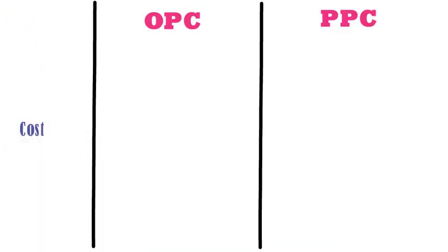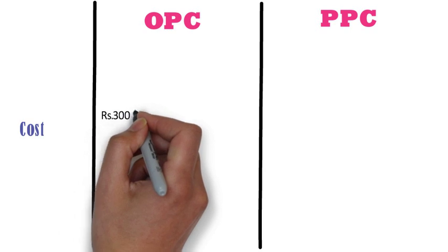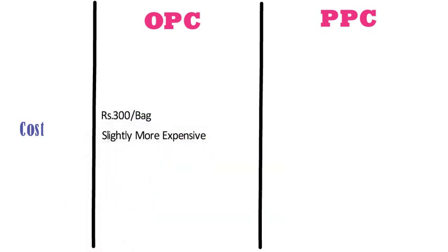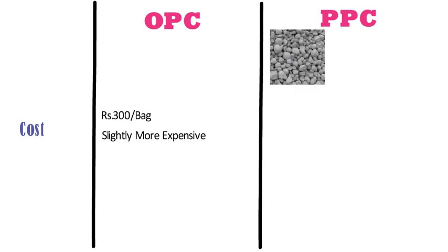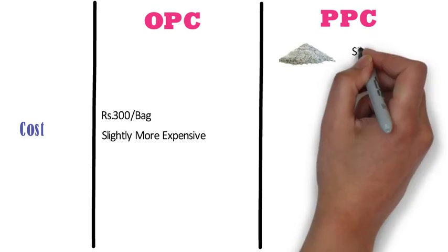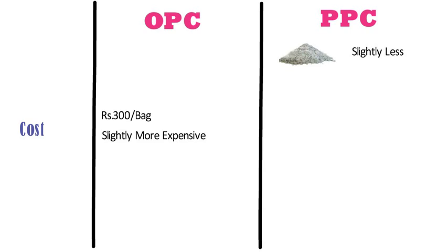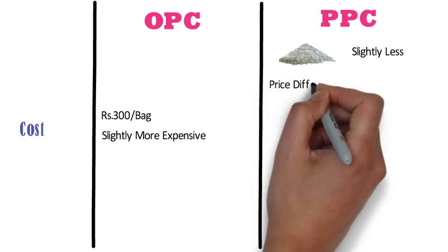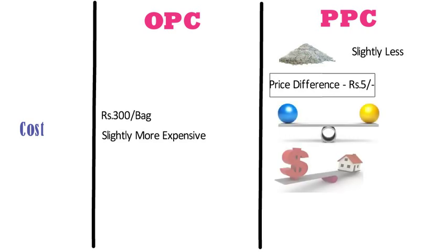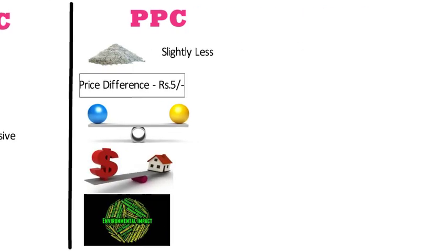Cost. The cost of OPC is around 300 rupees per bag, which is slightly more expensive than PPC. In case of PPC, the expensive clinker is replaced by pozzolanic material such as fly ash, hence the price of PPC is slightly less than OPC. Generally there is a price difference of about 5 rupees, but this slight difference creates a considerable impact on the overall cost of a building and on the environment.